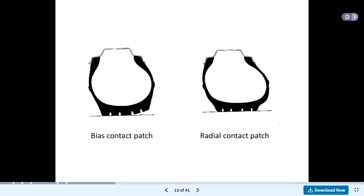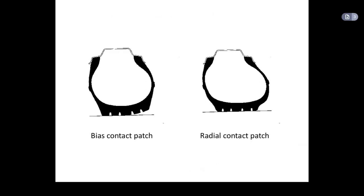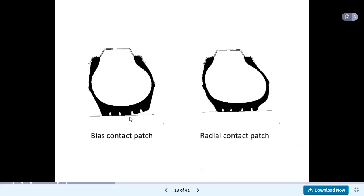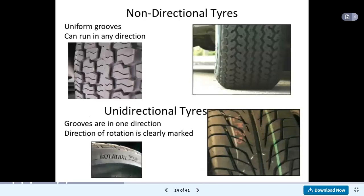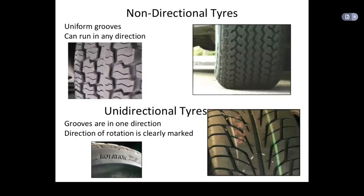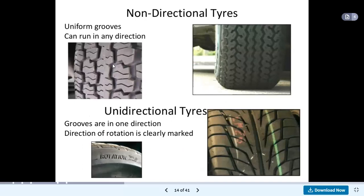If we see the diagrams related to the bias contact patch and radial contact patch: in the bias contact patch, the front portion is slightly in the upper/upward region. But in the case of radial contact patch, this patch is in full contact with the ground. Looking at the front view, non-directional tyres have uniform grooves and can run in any direction. Unidirectional tyres have grooves provided in one direction, with the direction of rotation clearly marked.